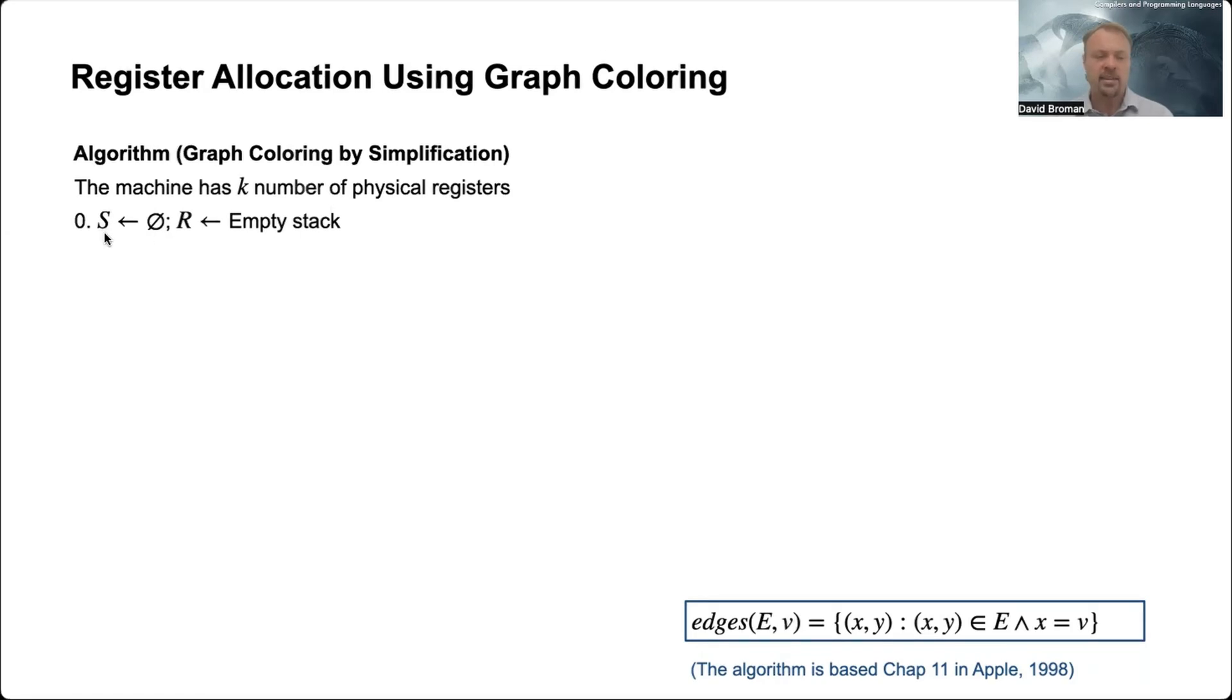And then we have two parts. We have this S here, which is the set of all variables - we're talking about virtual registers that should be spilled. And to start with, we say that this set is empty.